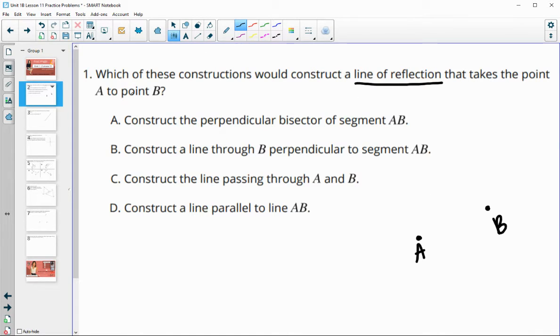If we want the line of reflection, we want the perpendicular bisector of the segment. So if we think about connecting this and then constructing this perpendicular bisector, that's where you're going to get the reflection of A to land on B.